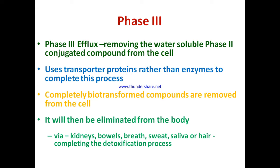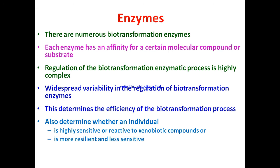After bio-inactivation in phase two, the chemical will get excreted and may pass through phase three. Phase three is an efflux state — removing the water-soluble phase two conjugated compound from the cell using transporter proteins rather than enzymes. Completely biotransformed compounds are removed from the cell and eliminated from the body via kidneys, bowels, breath, sweat, saliva, or hair, completing the detoxification process.